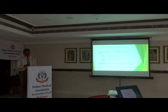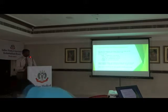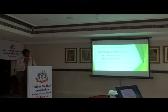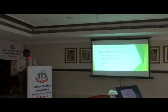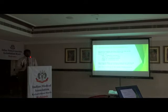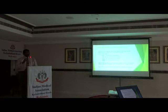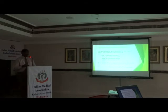Emphysematous pyelonephritis is basically air in the kidney. This can happen anywhere — in the kidney itself, the collecting duct, the ureteral wall, or bladder walls — and each is named accordingly. Most often what we find is emphysematous pyelonephritis within the kidney. Before 1990, the only treatment was nephrectomy, which was a very aggressive surgical option. With modern imaging techniques and good antibiotics, things have changed, and that is what we will discuss. It typically occurs in uncontrolled diabetics, much like mucormycosis.